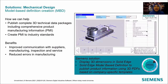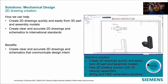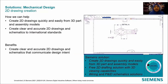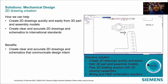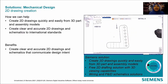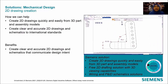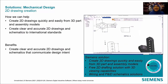Solid Edge has model-based definition capability where you can publish a complete 3D technical data package, including comprehensive product manufacturing information based on industry standards. This improves communication with suppliers, manufacturers, inspection, and service, and reduces errors in manufacturing. In 2D drawing creation, Solid Edge helps create drawings from 3D parts and assembly models, and creates accurate 2D schematics based on international standards, making drawing creation easy and quick.